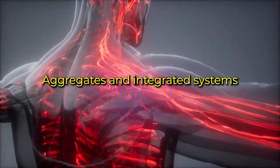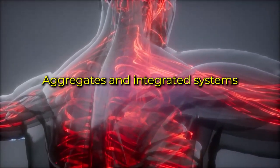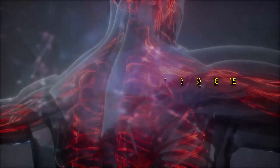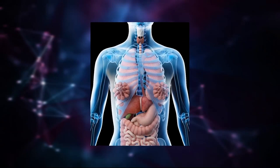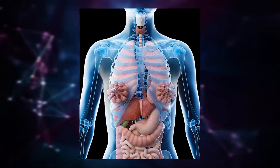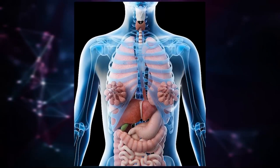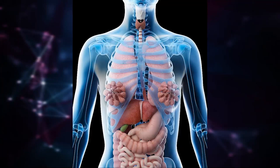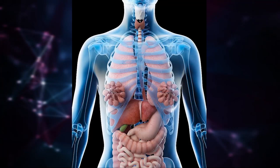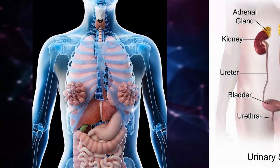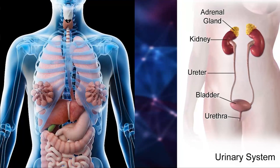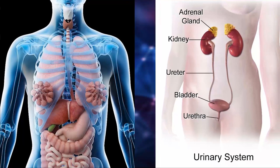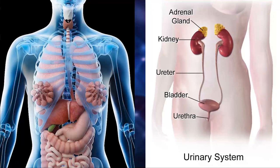Aggregates and integrated systems. If we use the human body as an example, it should be clear that all the organs and parts are joined together into one integrated system, despite the fact that medicine has divided our body into specialities. What happens in one area of the body affects every other part.